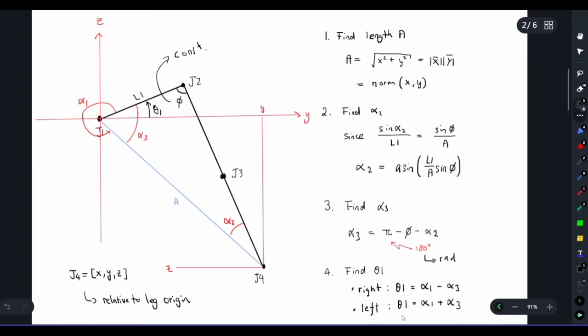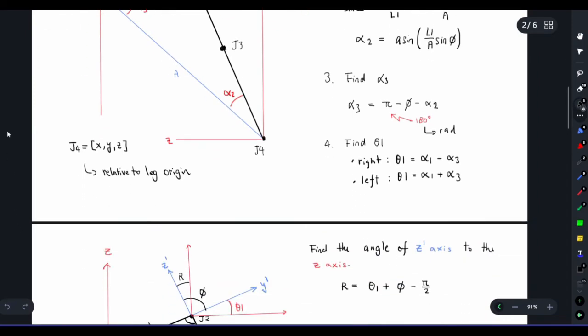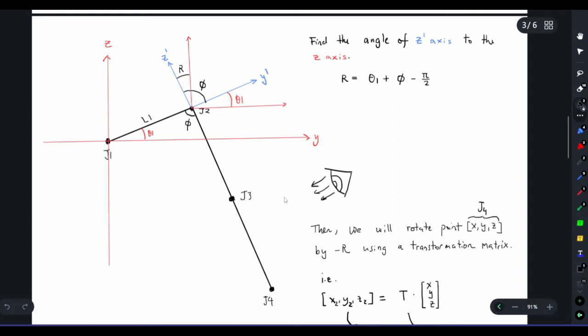That's the equation that we have to implement to get theta 1. That's one job done, we found our theta 1. Now we move on to finding the other angles, theta 2 and theta 3. To make things easier for us to calculate theta 2 and theta 3, we first rotate z and y axis by angle r. This angle r can be found by theta 1 plus pi which is the constant angle and depends on your robot's configuration, minus 90 degrees or pi over 2. In short, we are looking on this plane from this side onto this plane.